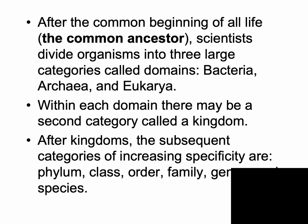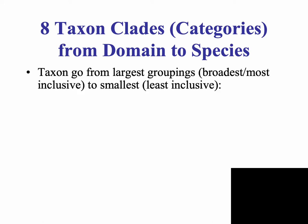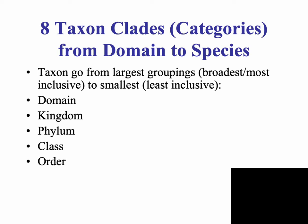The last groups — genus and species — contain more specific information. Going from our broadest, most inclusive group is the domain, then within a domain: kingdom, phylum, class, order, family, genus, and species.